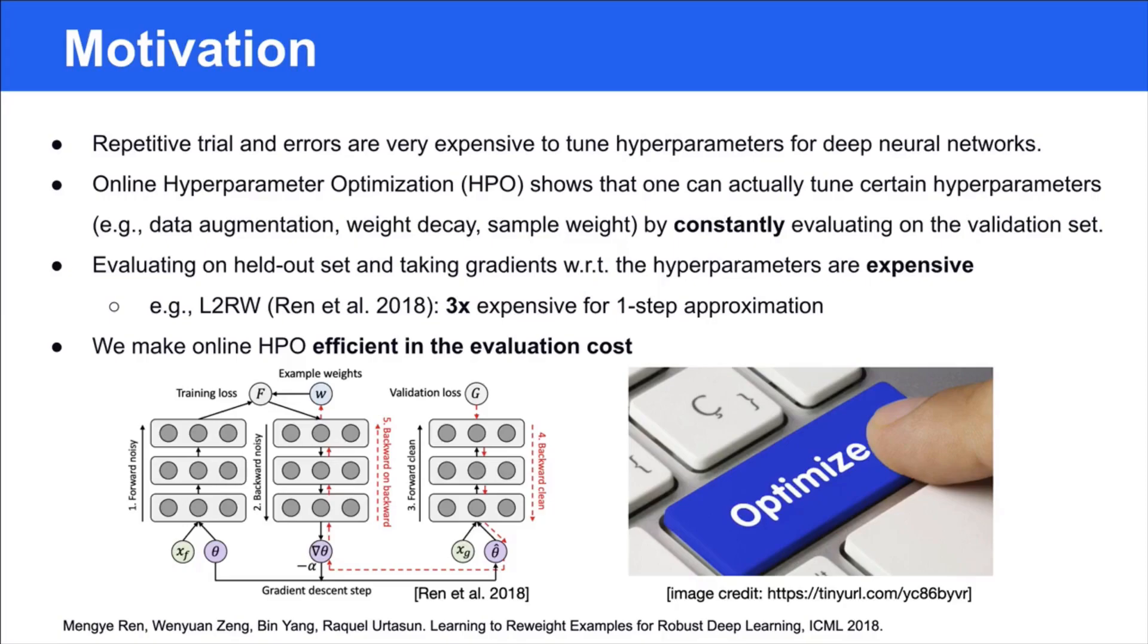It is well known that training deep neural networks involves a large number of hyperparameters, and many of them are found through repetitive trial and error. Online Hyperparameter Optimization, or HPO, could potentially save a lot of time compared to grid search procedures performed in nested loops.